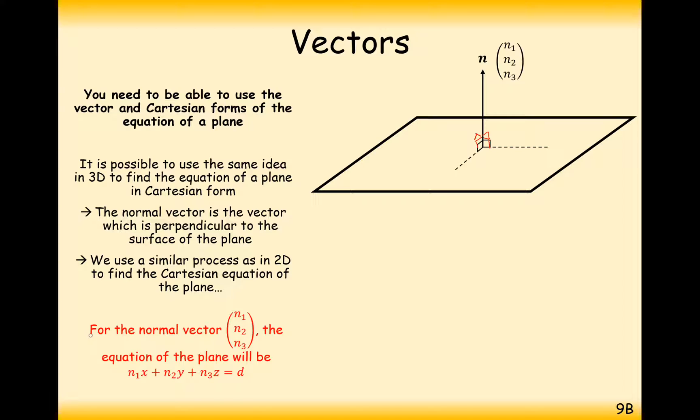Just as we saw with the equation of a line previously, for the normal vector n1, n2, n3, the equation of the plane is going to equal n1x plus n2y plus n3z equals d. And it needs some letter at the end here. So, usually we're going to be able to replace that letter here with a number. It's going to be some multiple of x, some multiple of y, some multiple of z equals some number at the end. It's just worth noting that that value at the end there does correspond to something.